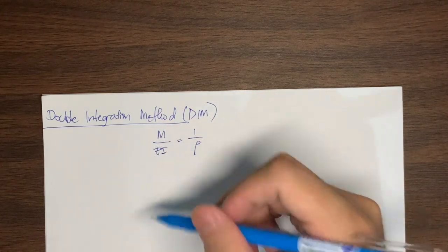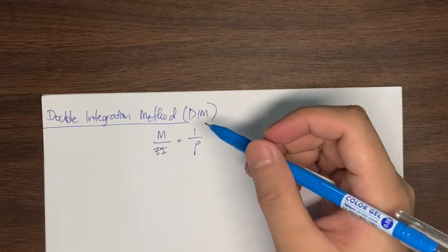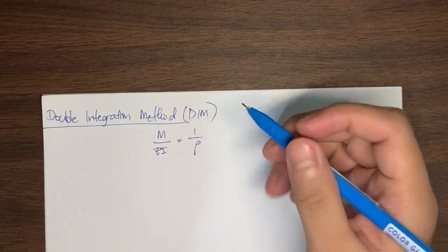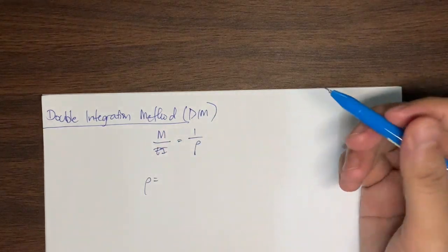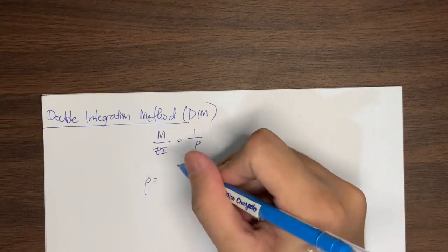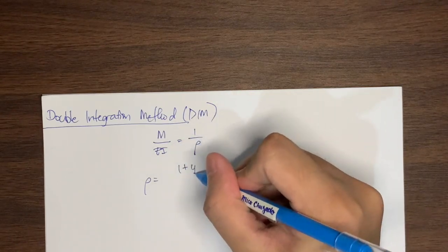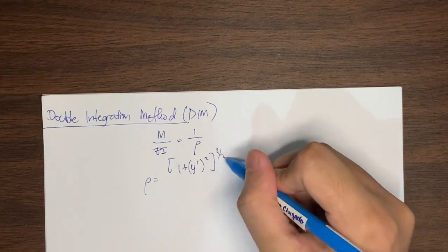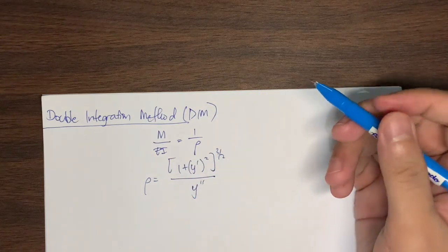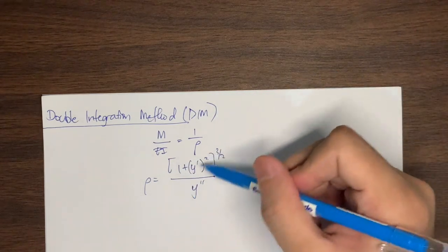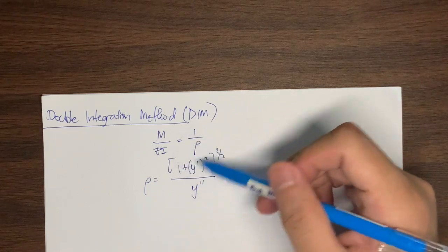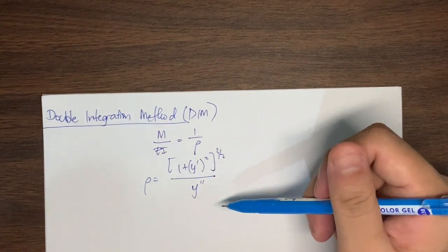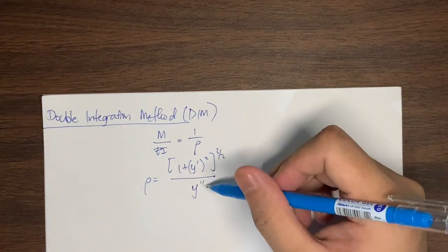This formula is also used in dynamics of rigid bodies when considering curved motions. The radius of curvature is defined as 1 plus the first derivative of the function squared, raised to the 3/2 power, divided by the second derivative of the function. This can be expressed using dy/dx as the first derivative and y double prime as the second derivative of y with respect to x.